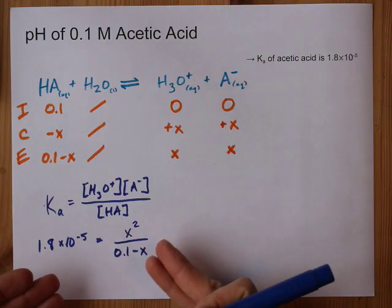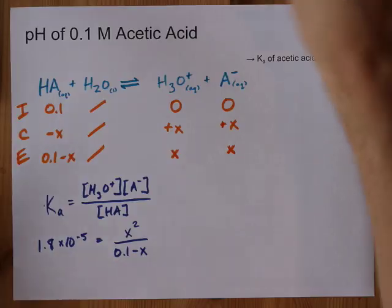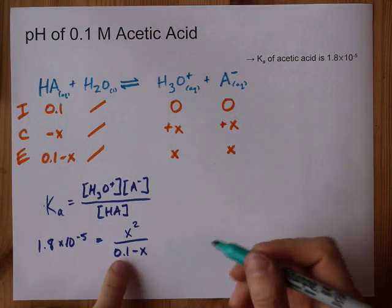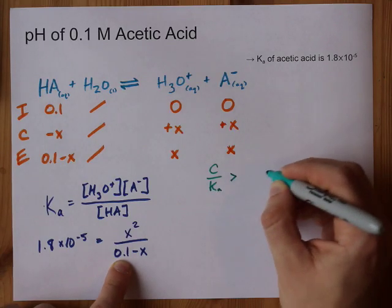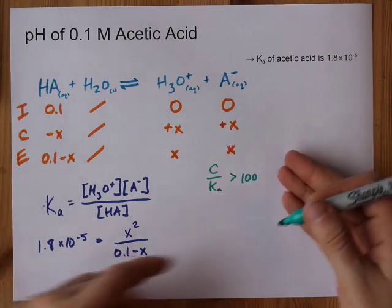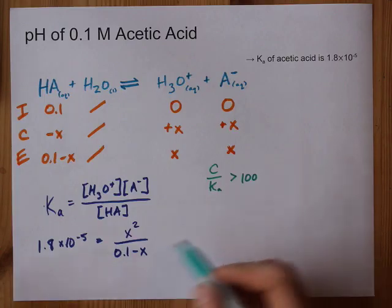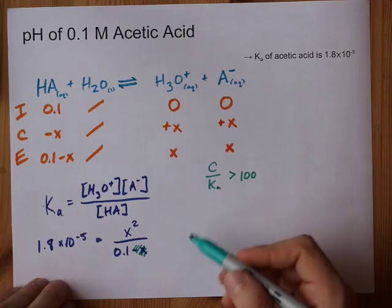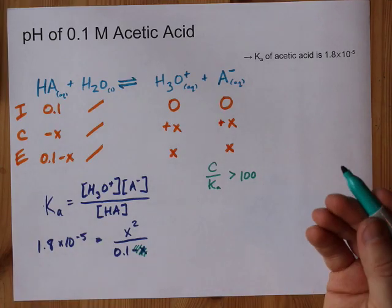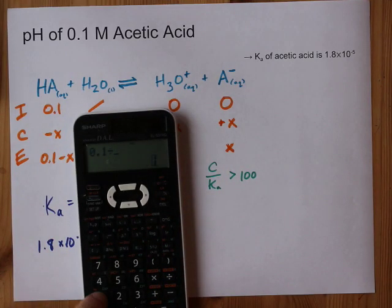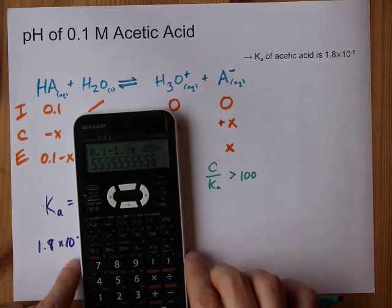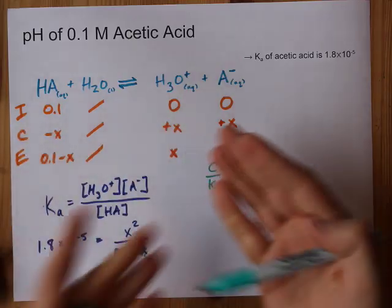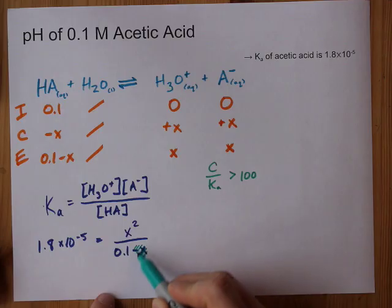If you know how to solve this rational quadratic expression, go ahead and use the quadratic formula. Otherwise, there's a shortcut: if the initial concentration divided by Ka is greater than the threshold your teacher uses — some use 100, some 500, some 1000 — then you're allowed to chop off the minus X, because X will be so small that compared to 0.1 it will have almost no effect. Here I get 0.1 divided by 1.8 times 10 to the minus 5, which gives me 5,555 — that beats all the thresholds. So the approximation is valid.